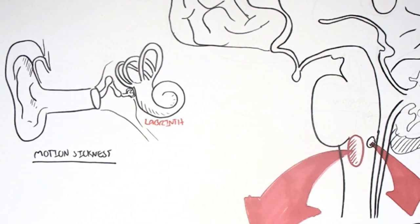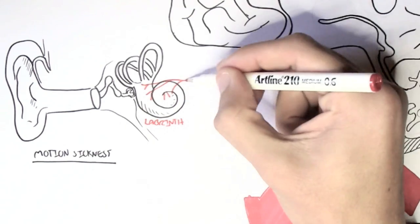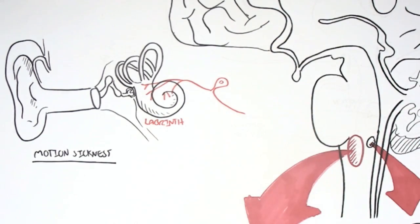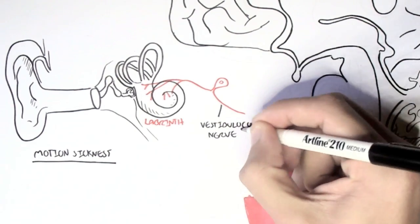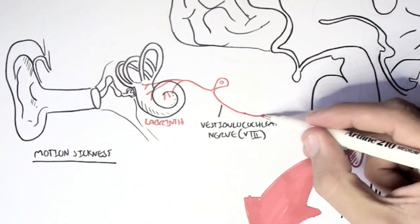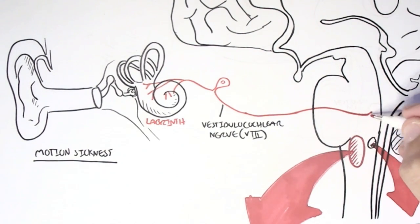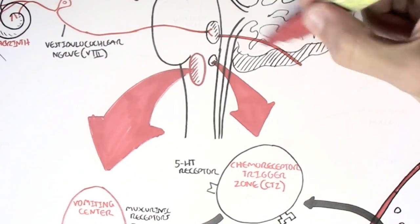Now motion sickness will activate, abnormally activate, the vestibular cochlear nerve, which connects the labyrinth to the vestibular nuclei here in the brainstem. Let's zoom into the vestibular nuclei.